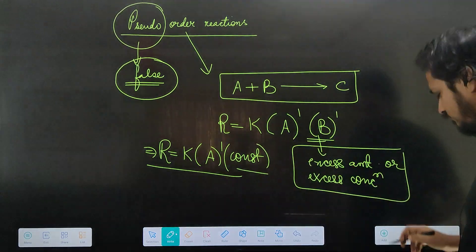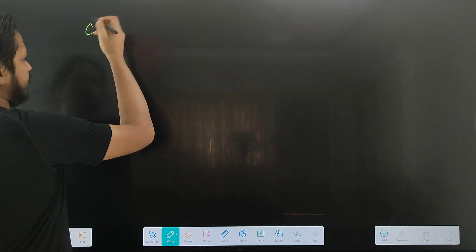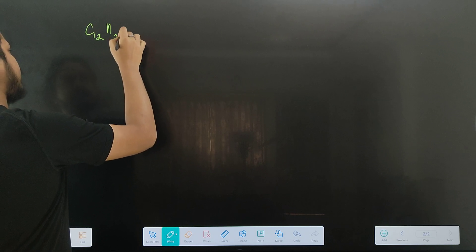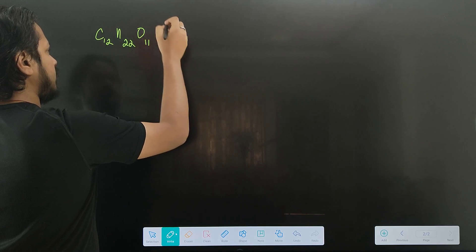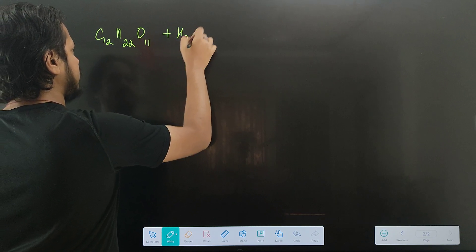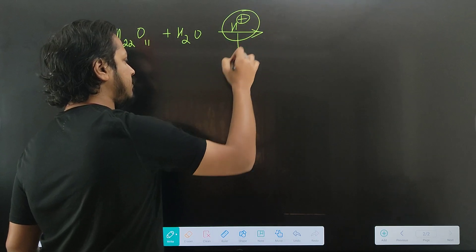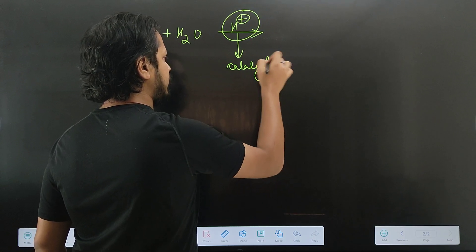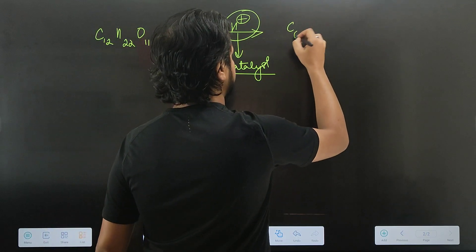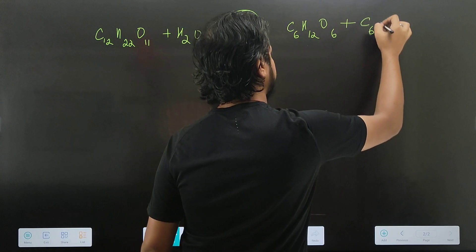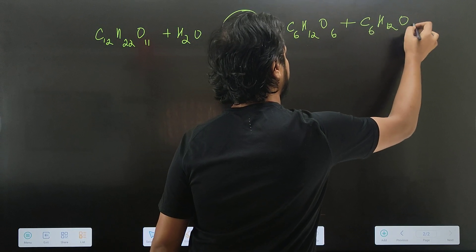Let's see an example. The reaction: C12H22O11 plus water in the presence of acid catalyst gives C6H12O6 plus C6H12O6.